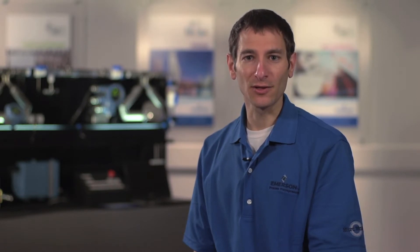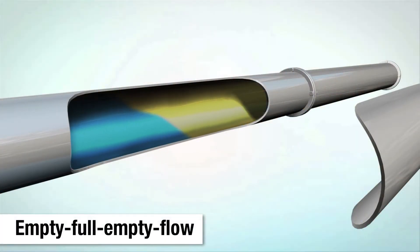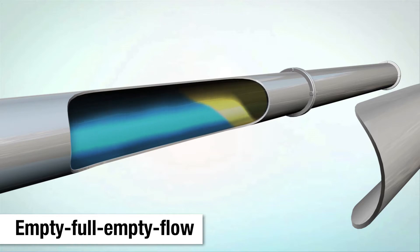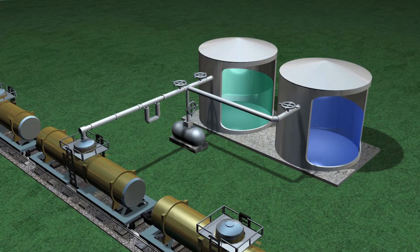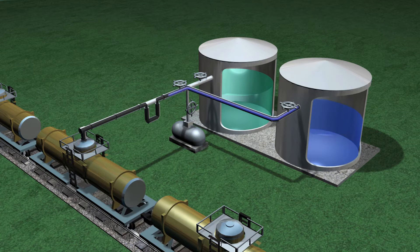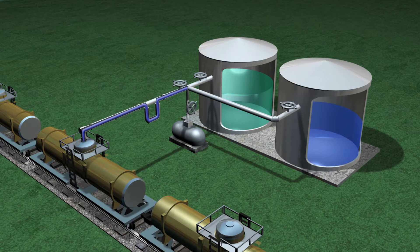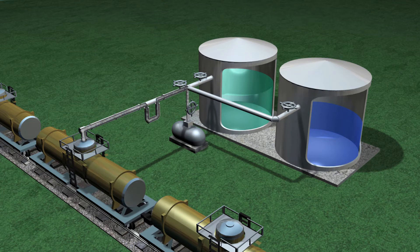Empty-full-empty flow applications include truck and tank loading and are characterized by a precise liquid-to-gas interface. This railcar loading process illustrates two products metered through one meter at different times. To avoid cross-contamination, the meter is blown dry between batches. Each batch begins empty, fills, then ends empty.